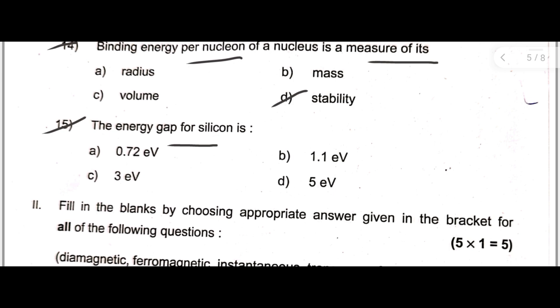The energy gap of silicon is 1.1 electron volt, option B. These are all the possible key answers of MCQ questions.